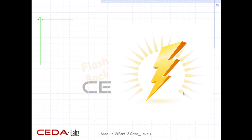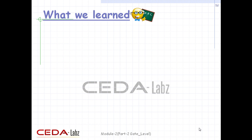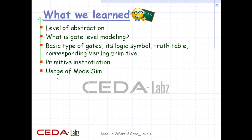Let's go back in a flashback to recall what we have learned in this module. We learned about levels of abstraction in Verilog, what gate-level modeling is, and the basic types of gates — each gate's logic symbol, truth table, and corresponding Verilog primitive. We studied primitive instantiation, learned how to use ModelSim, learned three types of gate delays, and saw examples of gate-level modeling.